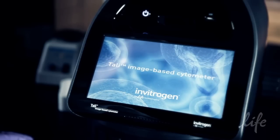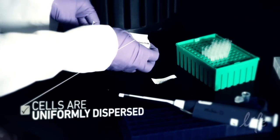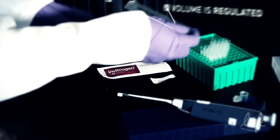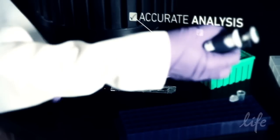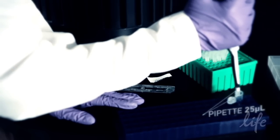The TALI cellular analysis slides are uniquely coated to help ensure that cells are uniformly dispersed and that sample volume is regulated for accurate analysis. Simply pipette 25 microliters of prepared sample into the slide.